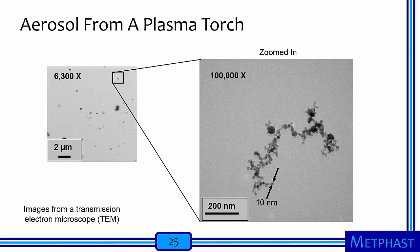Here I show one of my favorite examples of the net result of coagulation. I collected the particles shown in these transmission electron microscope images while cutting a metal ventilation duct with a plasma torch. It's hard to see the particles at a magnification of 6,300x at left. However, when you zoom in 100,000 times at right, you can see that particles have a beautiful chain or fractal structure. This particle formed by several key steps: the heat of the plasma torch vaporized the metal, the metal then nucleated as it cooled to form 10 nanometer sized metal particles, the concentration was so high that the particles hit each other and stuck together, forming what we call a chain agglomerate. This type of structure is very typical of hot processes.